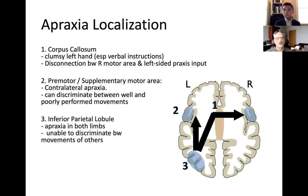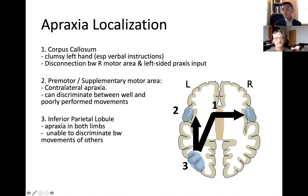Apraxia is one of these syndromes that can involve a callosal deficit, although it doesn't necessarily have to. A callosal lesion can cause apraxia of the left hand — that's an important point for students to know. Clinically, when seeing patients and for test-taking purposes, if you're not thinking about the corpus callosum in the context of apraxia, you can completely miss it. So it's always important to keep that in mind.